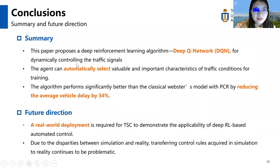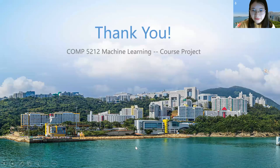In conclusion, this paper proposed a deep reinforcement learning algorithm, DQN, for dynamically controlling traffic signals. The agent can automatically select valuable and important characteristics of traffic conditions for training, and our algorithm performs better than the baseline. For future directions, a real-world deployment is required to demonstrate the applicability of deep RL-based control. Due to disparities between simulation and reality, transferring control rules learned in simulation to reality continues to be a problem. That's all. Thank you for listening.